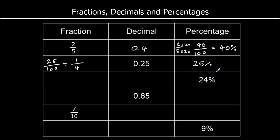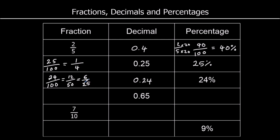We've got 24%. Divide by 100 to make it a decimal: 0.24. To write it as a fraction, write it over 100: 24 over 100. If we halve top and bottom, we get 12 over 50. Halve again: 6 twenty-fifths. 6 and 25 aren't in the same times table, so that's as simple as it gets.